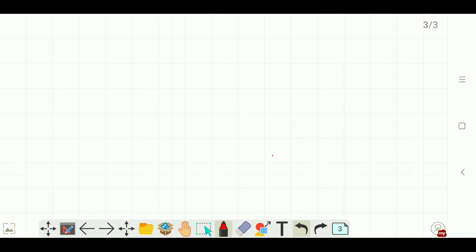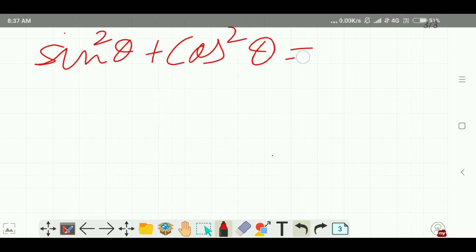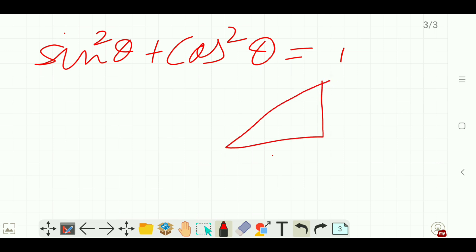For example, you can write anything with the help of your finger: sin²θ + cos²θ = 1. You can draw any triangle, any shape, whatever you like.